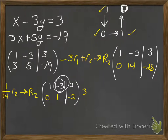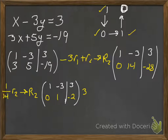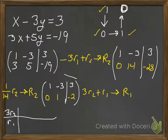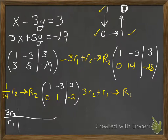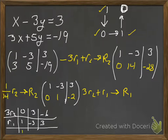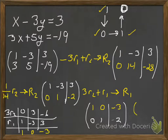We just need to make a 0 in column 2, row 1. To make a 0 in column 2, we use row 2 with the opposite of negative 3, which is 3. So we do 3 times row 2 plus row 1, replacing row 1. That gives 3 times 0 is 0, 3 times 1 is 3, 3 times negative 2 is negative 6; row 1 is 1, negative 3, 3. Adding those, we are now in reduced row echelon form — RREF. The solution is x equals negative 3 and y equals negative 2.